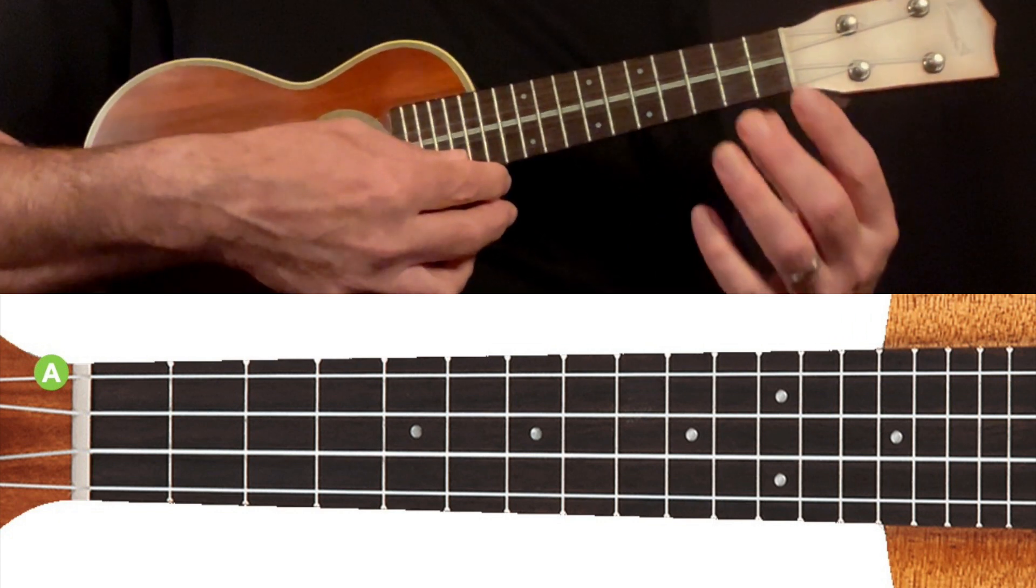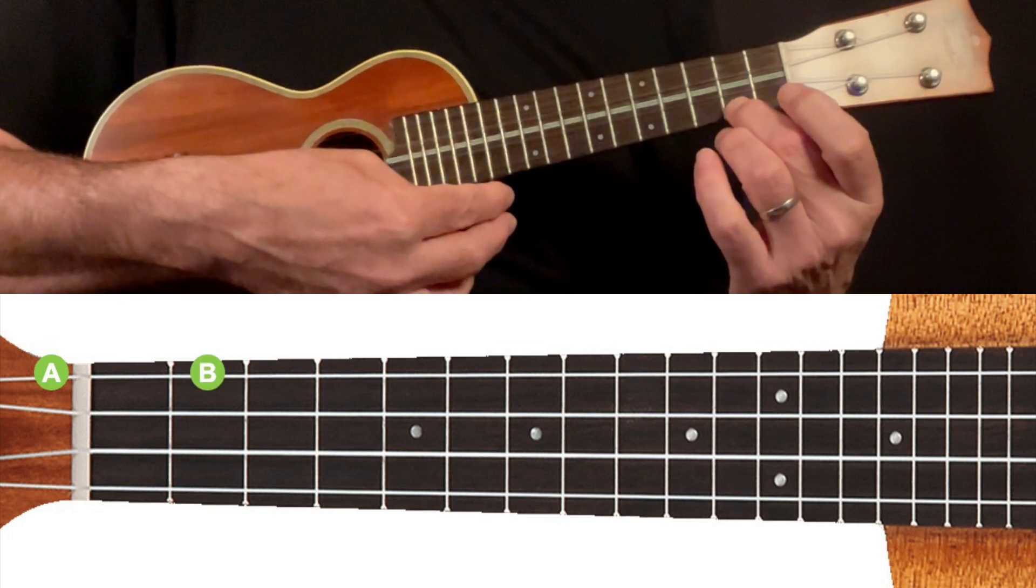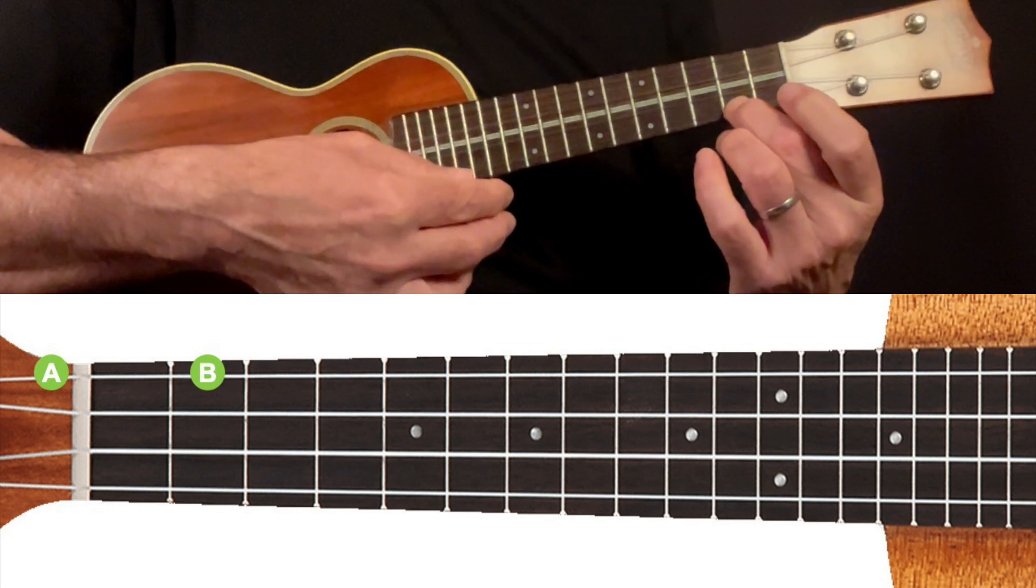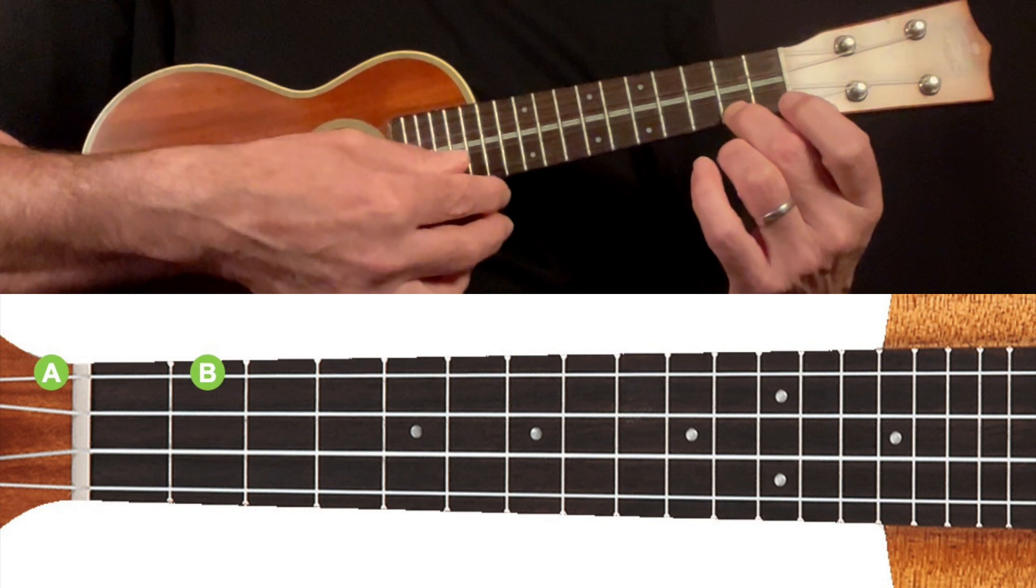If we then fret the A string at the second fret and pluck the string, we have a B note. Hopefully you can hear that we've moved up in pitch. The new note B is higher in pitch than the A.